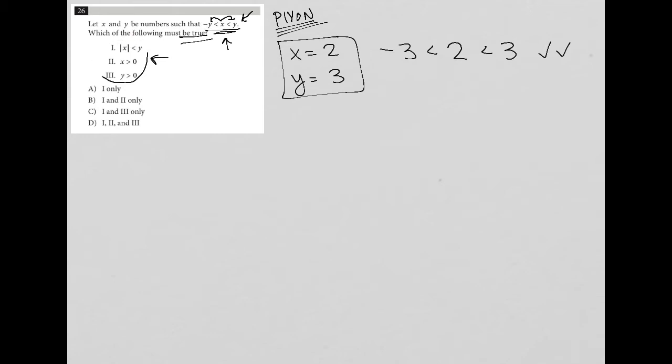So then which of the following must be true? Let's see for option one, the absolute value of X is less than Y. Let's check that out. The absolute value of, based upon the numbers I chose, absolute value of two is less than three. That's true. How about choice two? X is greater than zero. Two is greater than zero. So that's true. And Y is greater than zero. Three is greater than zero. That's also true.